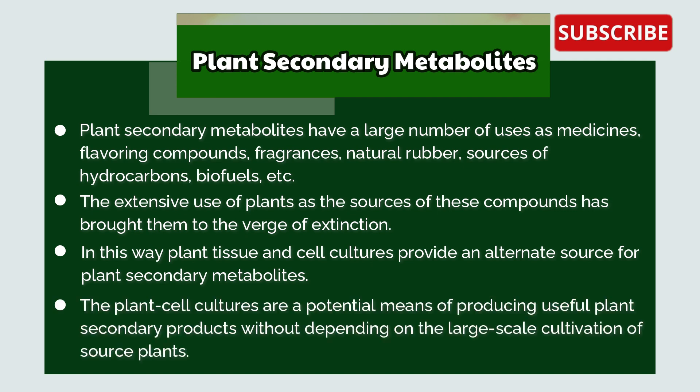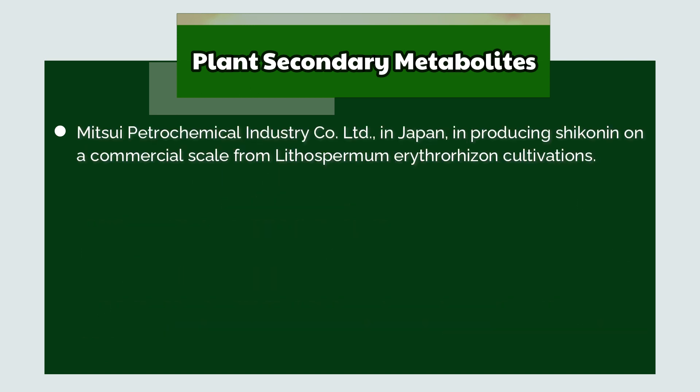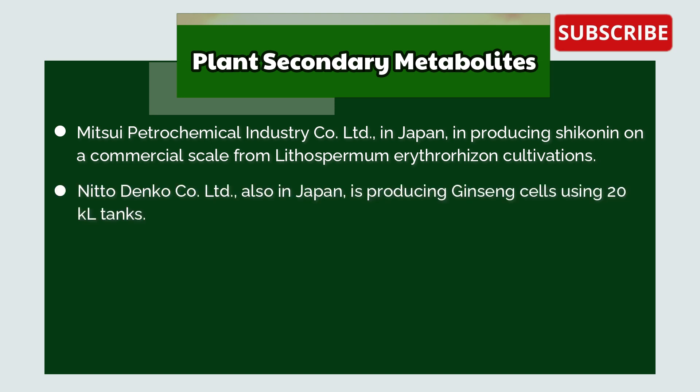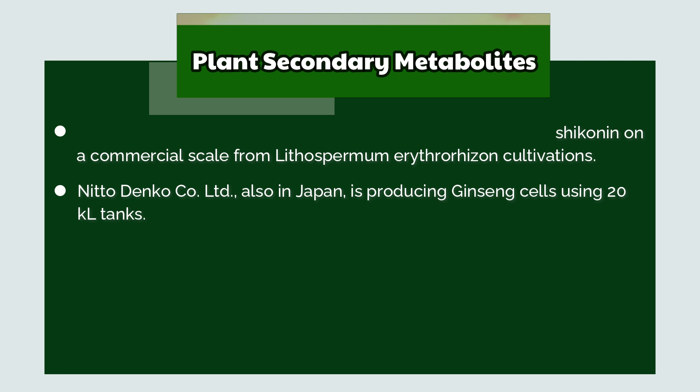Plant cell cultures are the potential means of producing useful plant secondary products without depending on large-scale cultivation of source plants. Mitsui Petrochemical Industry in Japan is producing shikonin on a commercial scale from Lithospermum erythrorhizon cultivations. Nitto Denko, also in Japan, is producing ginseng cells from 20,000-litre tanks.